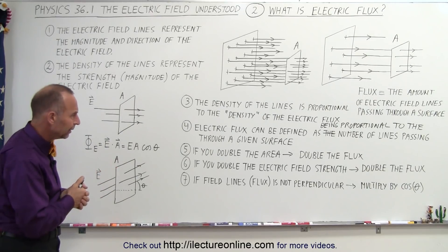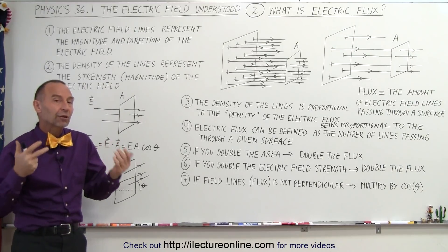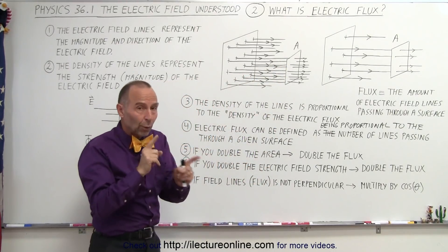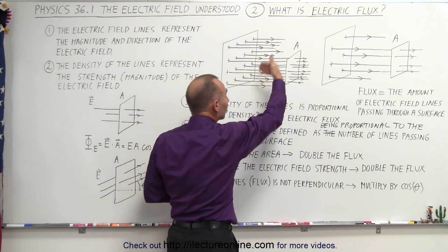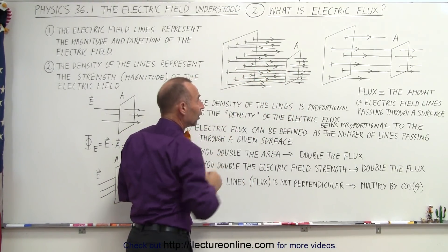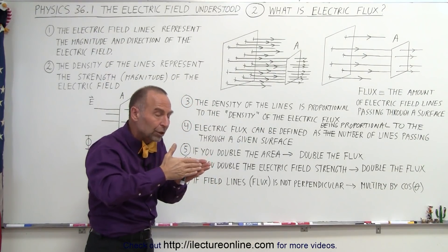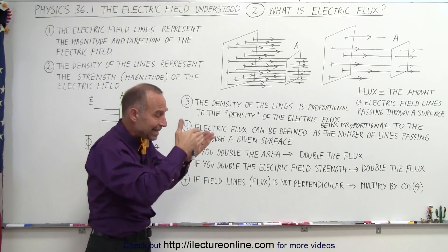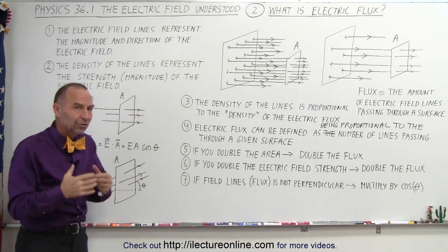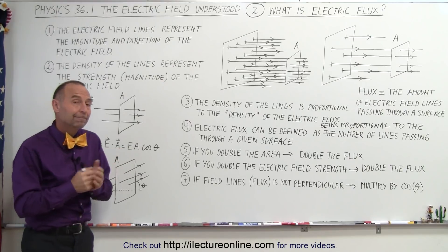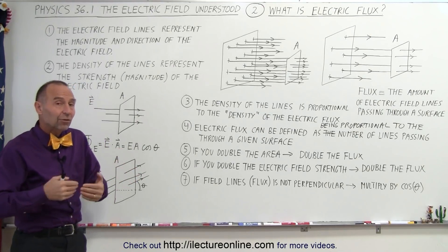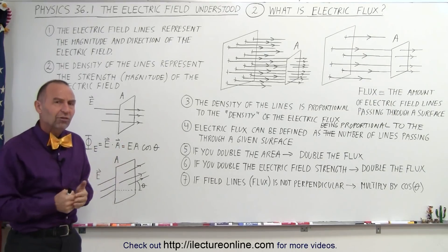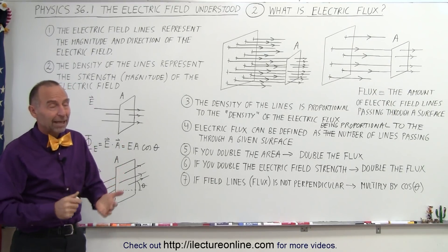We'll show some examples of that later, but at least this gives you an indication of what electric flux is. It's analogous to electric field lines going through a surface — it's proportional, not a one-to-one correspondence. The stronger the field, the more lines, the more flux. If you double the number of lines, you double the flux. But notice that if the field lines go through the surface at an angle, it actually decreases the flux — we have to multiply by the cosine of angle theta. So that hopefully defines what electric flux is, and now when we see it, we don't have to be afraid of it. It's the total number of field lines going through the surface, adjusted by the angle they have relative to the perpendicular to the surface.